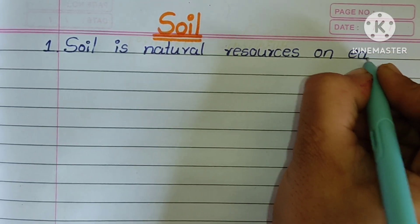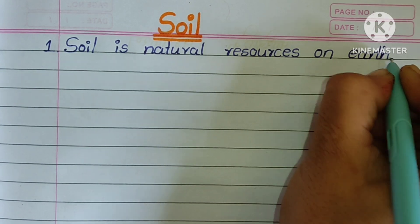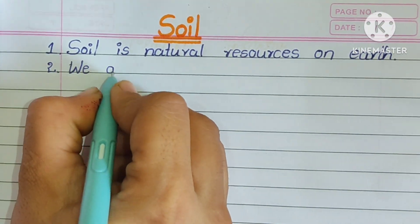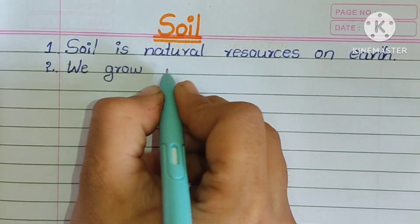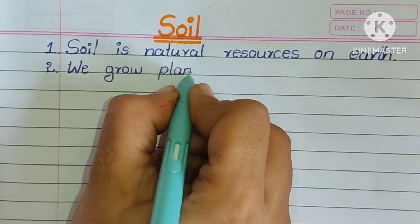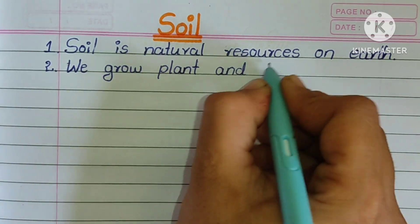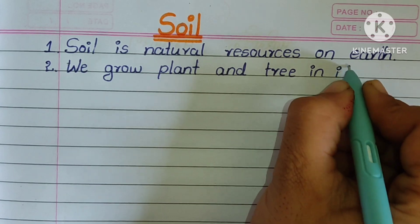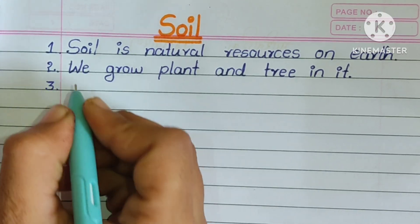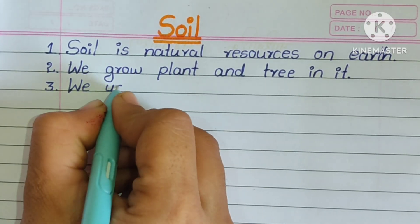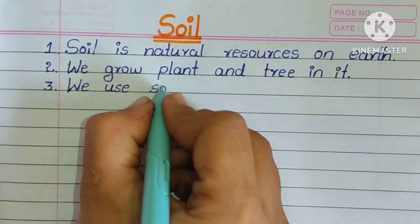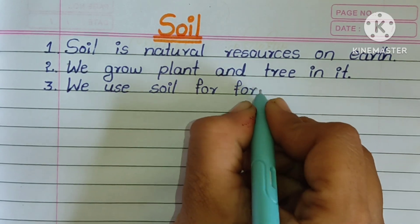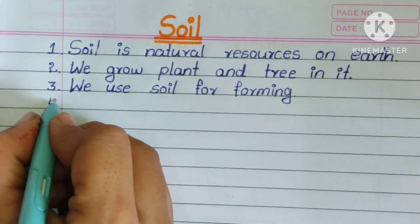First one is soil is a natural resource on earth. Second one is we grow plants and trees in it. Third one is we use soil for farming.